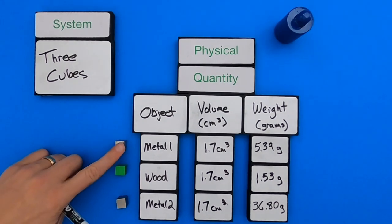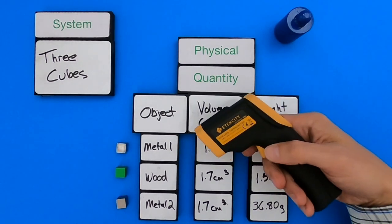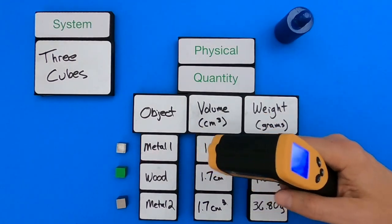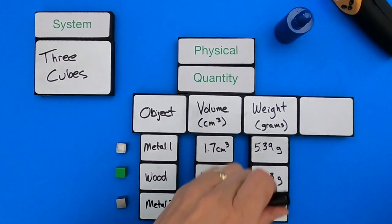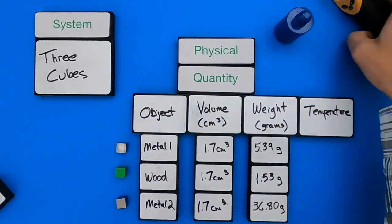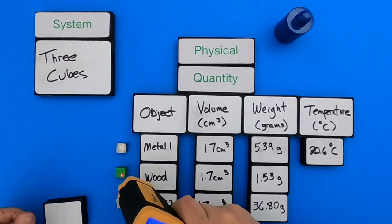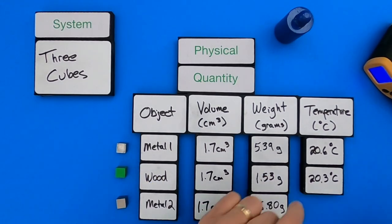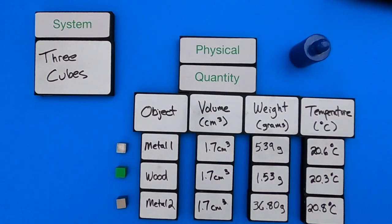What else is kind of interesting? When I was feeling them, they seem to have different temperatures. So maybe temperature would be an interesting thing. We can use this, which is just an infrared thermometer, to measure that. So let me put down temperature, and then we will record those physical quantities. All right, so that's physical quantities with these three cubes.